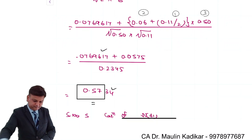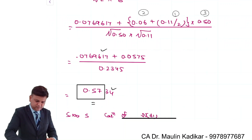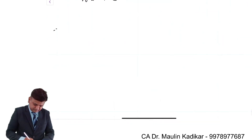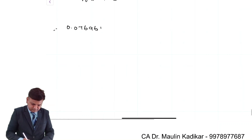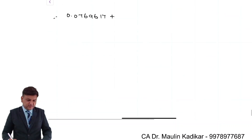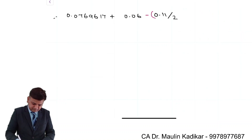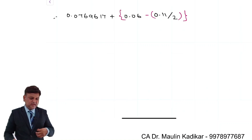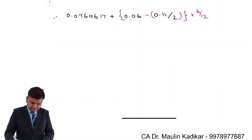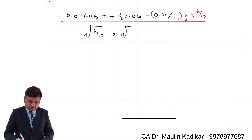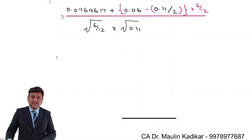It is 0.0769617, plus rf — the risk-free rate of return — which is 6 percent, minus variance 0.11 divided by 2, whole multiplied by the time period 0.50, whole divided by the square root of the time period multiplied by the standard deviation, that is the square root of the variance. This is the way we make the calculation.